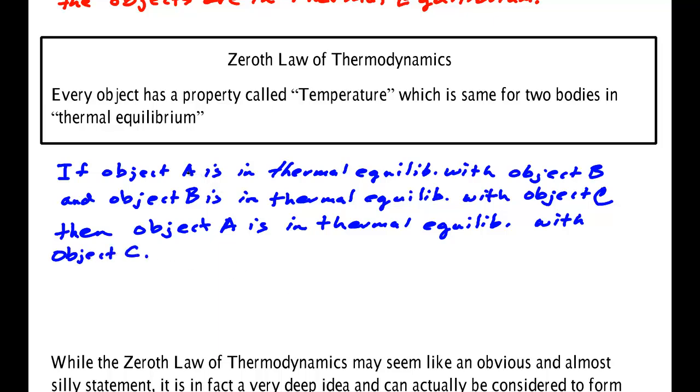In other words, if A is at a temperature of 50 degrees and B is at a temperature of 50 degrees, and if B is in thermal equilibrium with C, that means that the temperature of B is the same as the temperature of C. So if B is 50 degrees, C is 50 degrees. But if C is 50 degrees and A is 50 degrees, then they're in equilibrium as well. So it simply says if A has the same temperature as B, and B has the same temperature as C, then A has the same temperature as C. Simple logic.